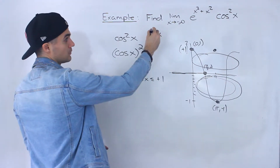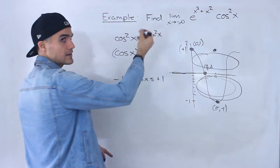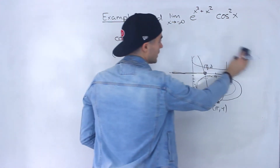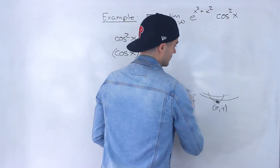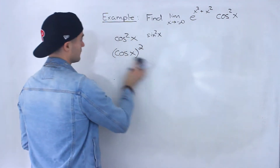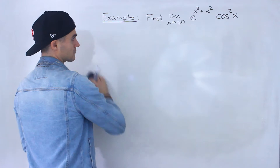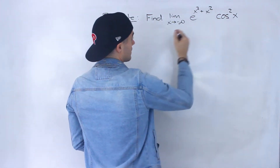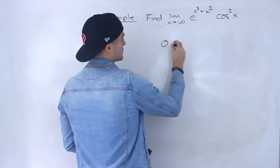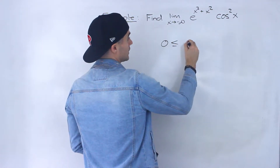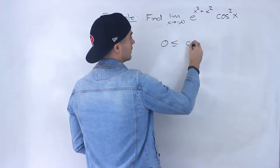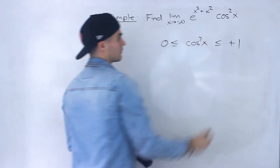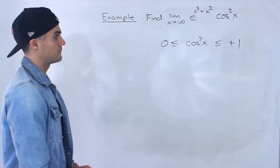And actually, we don't just have to square them — this could be any even exponent. So, knowing that, cos squared x is always going to be between 0 and positive 1.